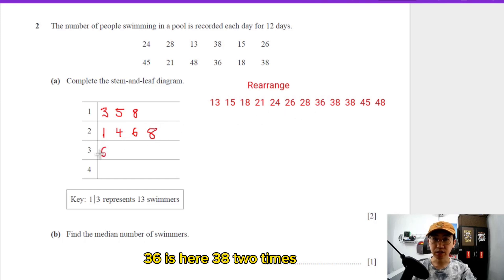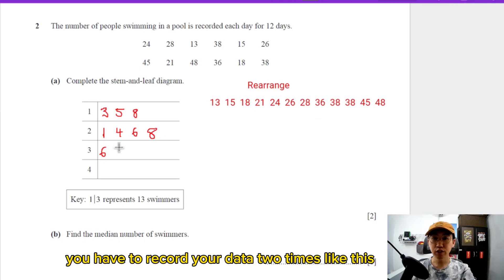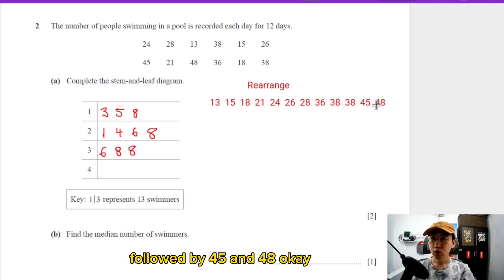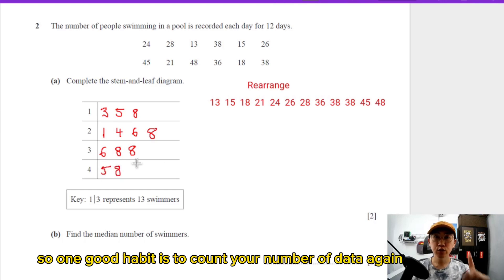36 is here, 38 two times, so you have to record your data two times like this, followed by 45 and 48. One good habit is to count your number of data again to make sure.